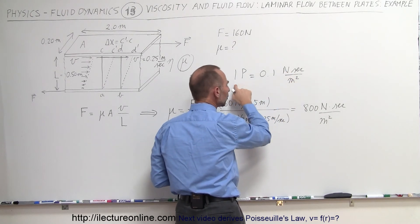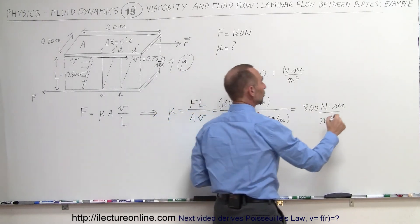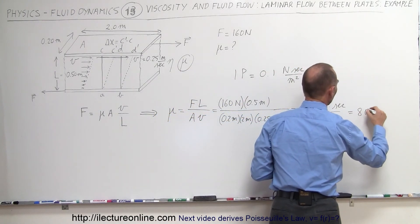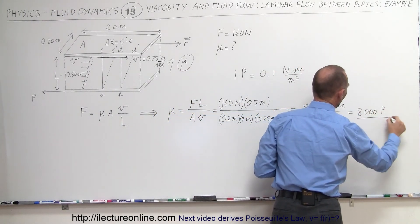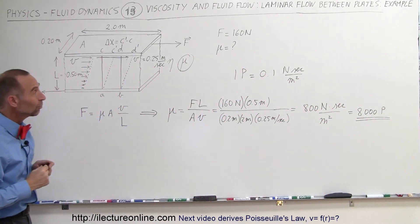Therefore, 800 Newton-seconds per meter squared is 8,000 poise. So this would be equal to 8,000 poise, and that is the viscosity of the fluid.